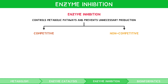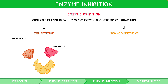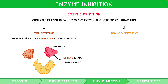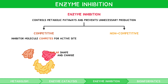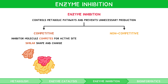In competitive inhibition, the inhibitor molecule competes for the active site with the substrate. It is therefore similar in shape and charge to the substrate, and when it binds to the active site of the enzyme, it prevents binding of the substrate and thus inhibits the desired reaction.